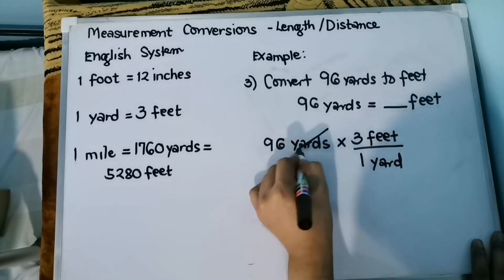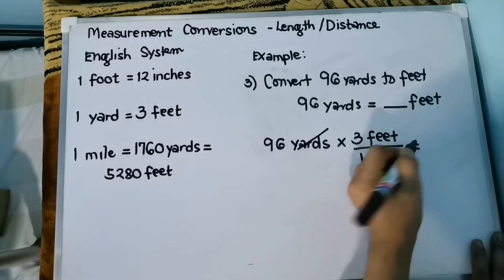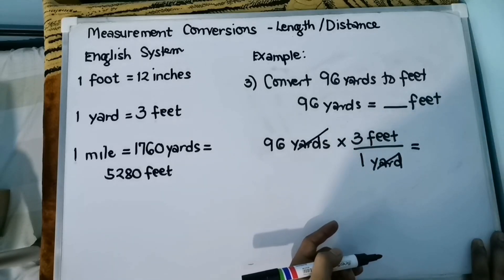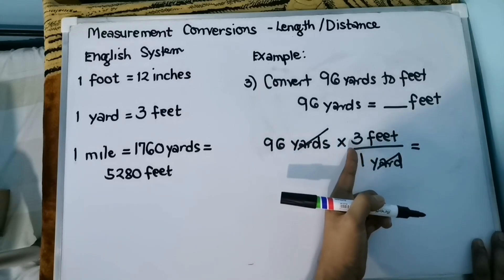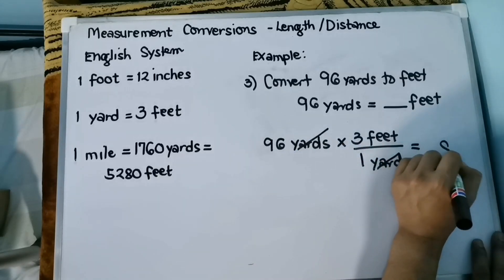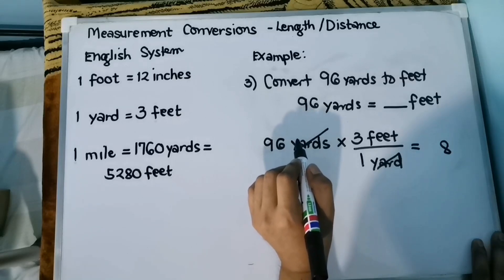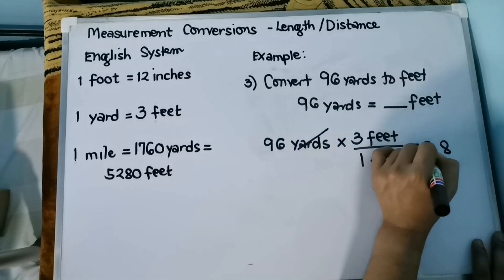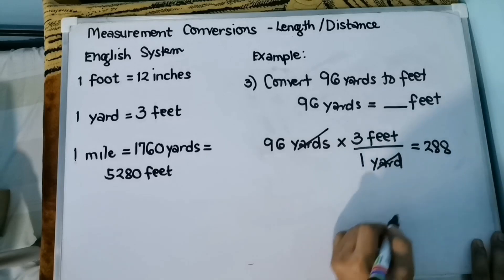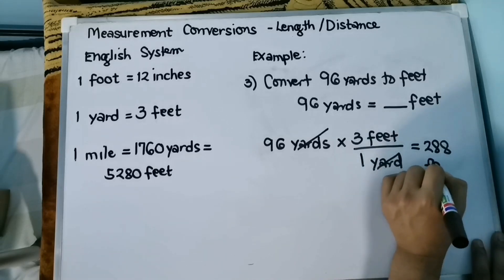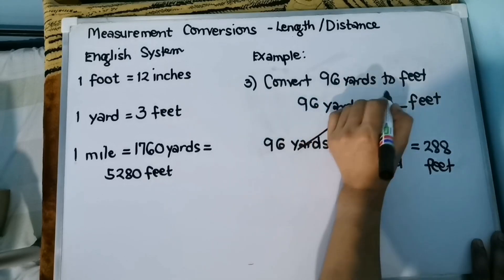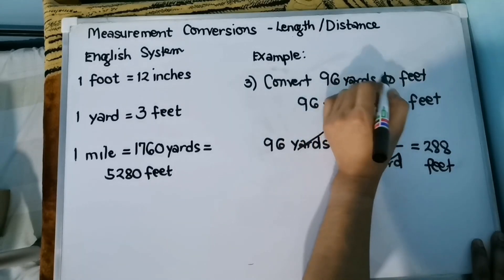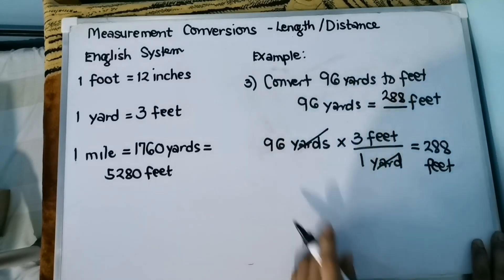We can write it as 96 yards times 3 feet over 1 yard. And then we cancel. So we need to multiply. We have here 96 times 3, we have 288 feet. If we have 96 yards, we have 288 feet.